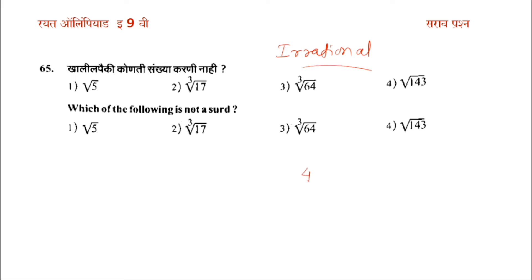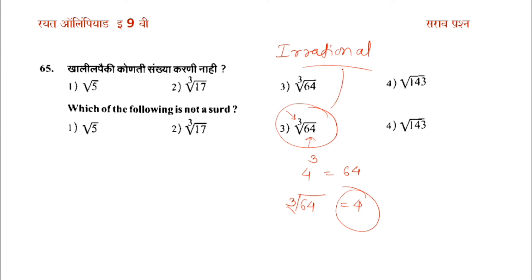The cube root of 64 is 4, and 4 is a rational number — not an irrational number. If you have a radicand that is a positive number and a positive integer order, you check whether the result is rational. The cube root of 64 is 4, which is not irrational. The square root of 143 is also irrational — this is not rational.